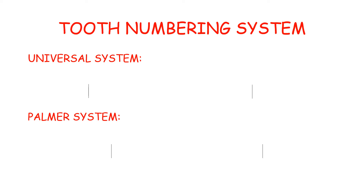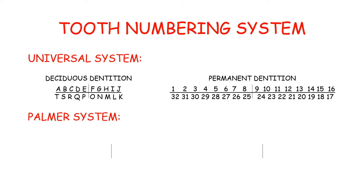The universal system of notation for the primary dentition uses uppercase letters for each primary tooth. Letters A, B, C, D, E for right maxillary teeth; letters F, G, H, I, J for left maxillary teeth; letters K, L, M, N, O for left mandibular teeth; and letters P, Q, R, S, T for right mandibular teeth.